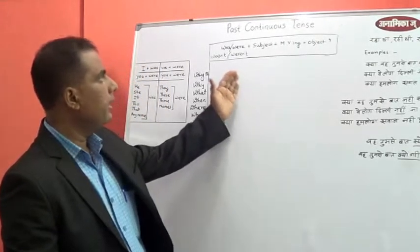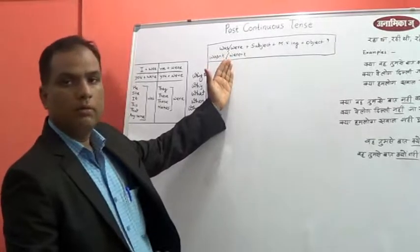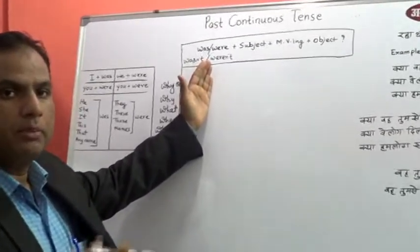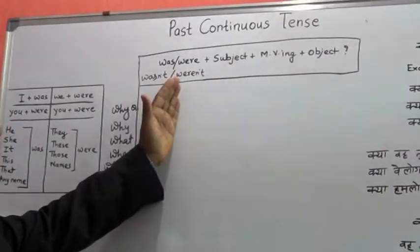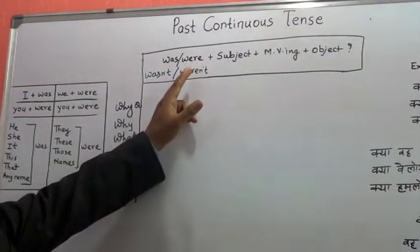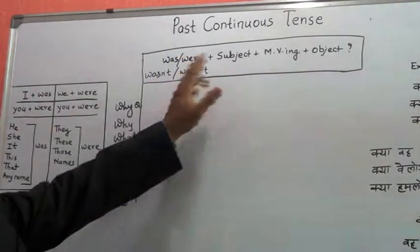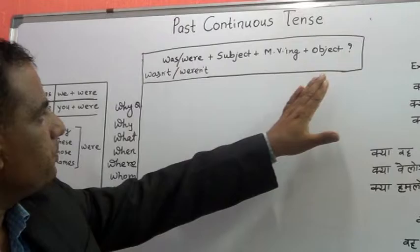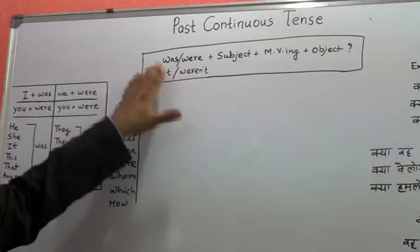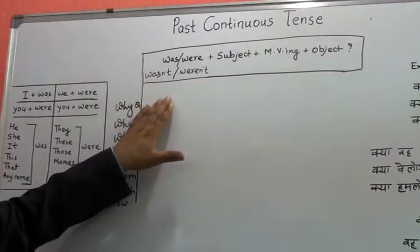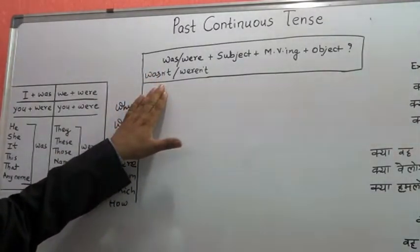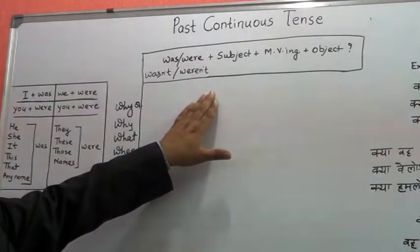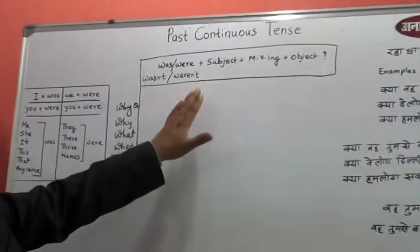After positive and negative, let's learn how to frame questions in past continuous tense. There are two kinds of questions. First are those questions which are replied in either yes or no — those questions will start with the helping verb 'was' or 'were' depending on the subject, then the subject, then the verb with -ing, and finally the object. If the question involves a negative activity, it will start with 'wasn't' or 'weren't' depending on the subject.